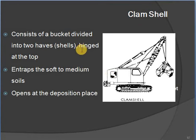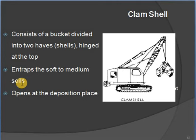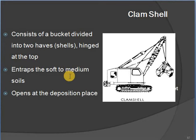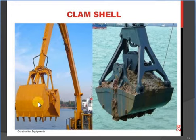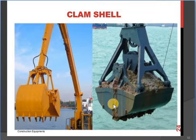A clamshell consists of a bucket divided into two rough shells hinged at the top, used for transferring soft to medium soils. It opens at the deposition place, picks up the soil, holds it, and pushes the soil out at the desired location.